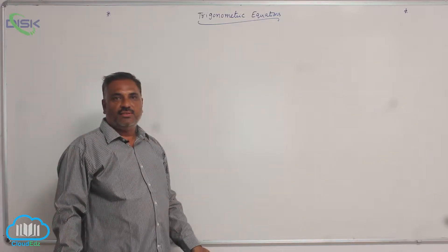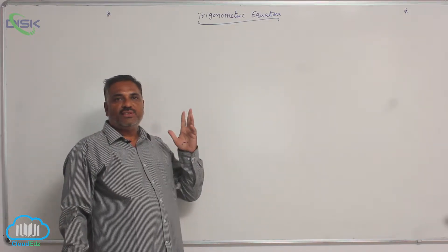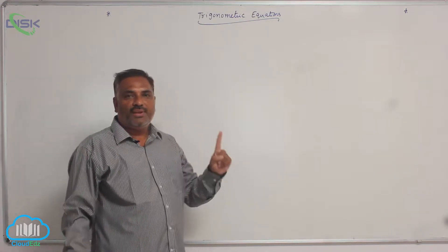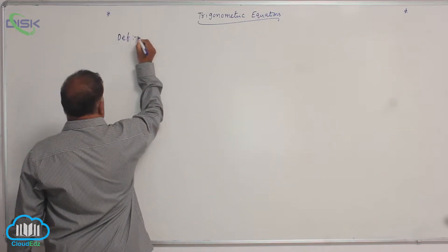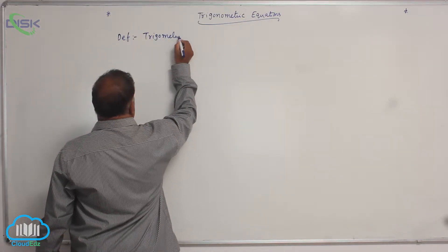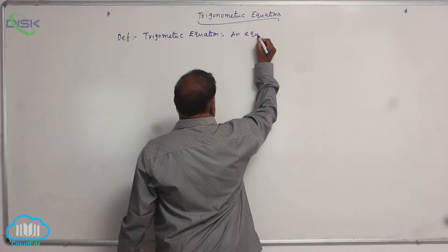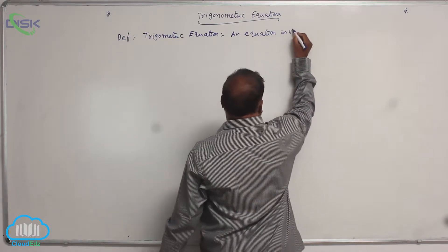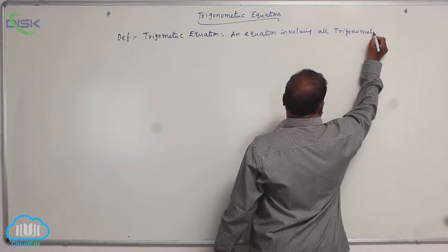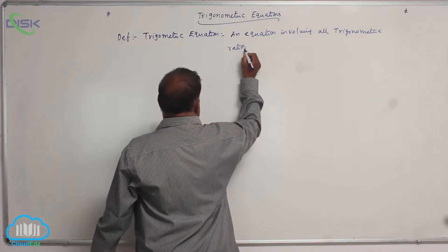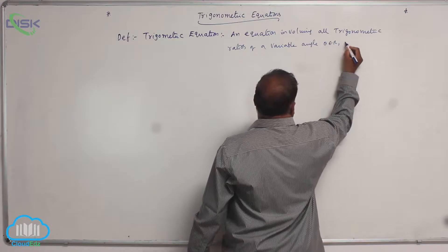We'll discuss trigonometric equations — a new topic. First, we'll define what a trigonometric equation is. A trigonometric equation is an equation involving all trigonometric ratios of a variable angle theta, where theta belongs to R.